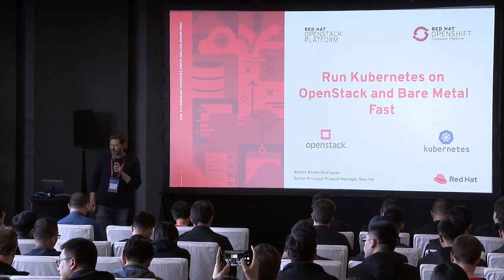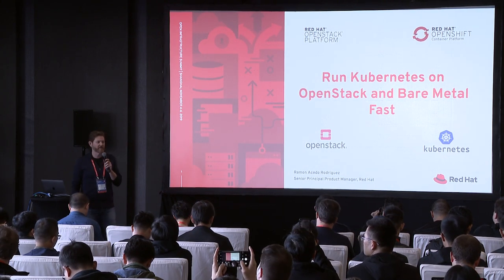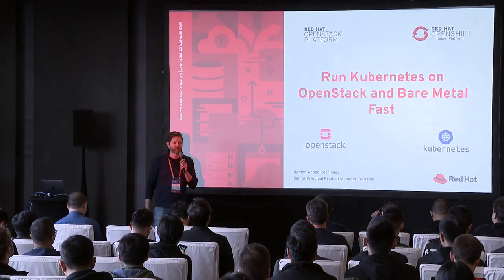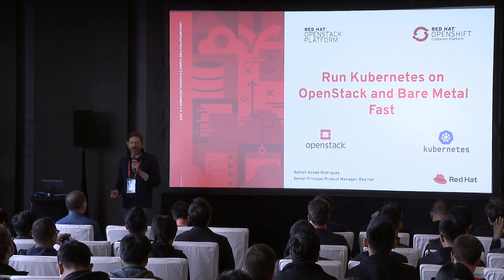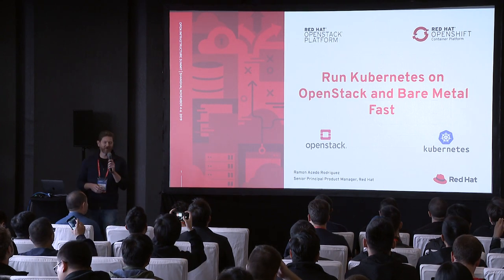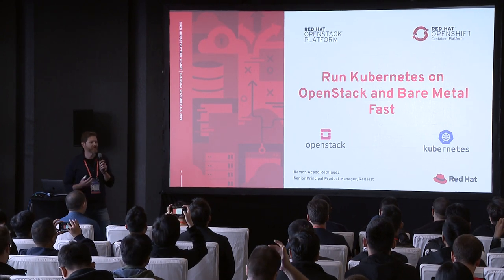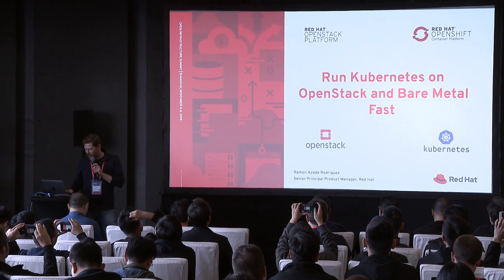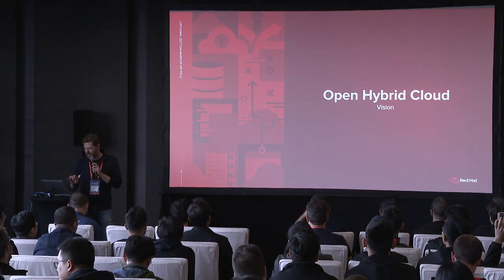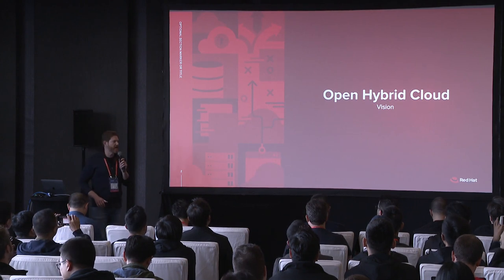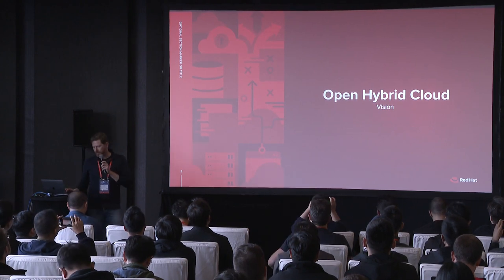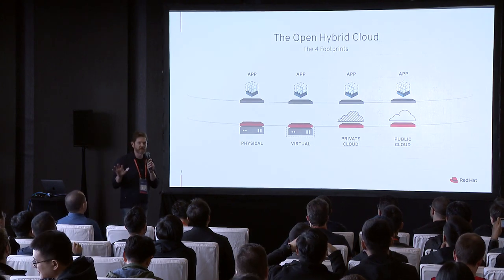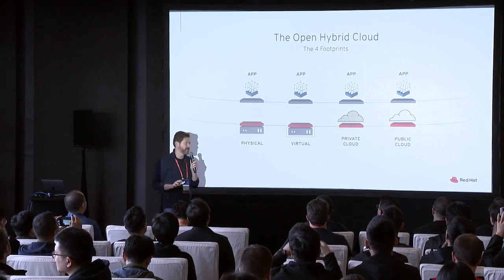I think it's half past now, so let's go and start. Welcome, everyone. Today we're going to talk about running Kubernetes on OpenStack and a bit more — also on bare metal — and how to do it in a way that's fast. That's why we do it on bare metal too, among other things. But let's start by talking about the vision, the concept of the open hybrid cloud, because it's all related, as you're going to see.